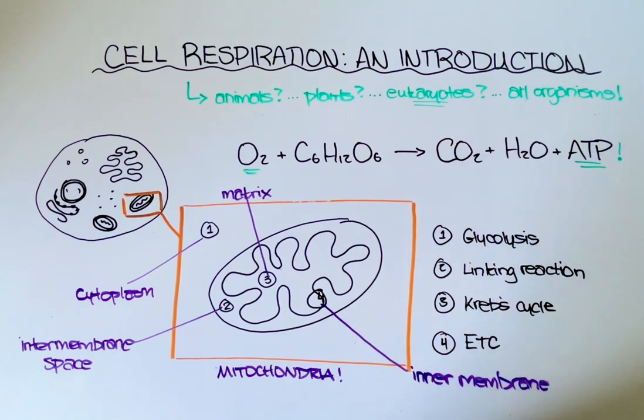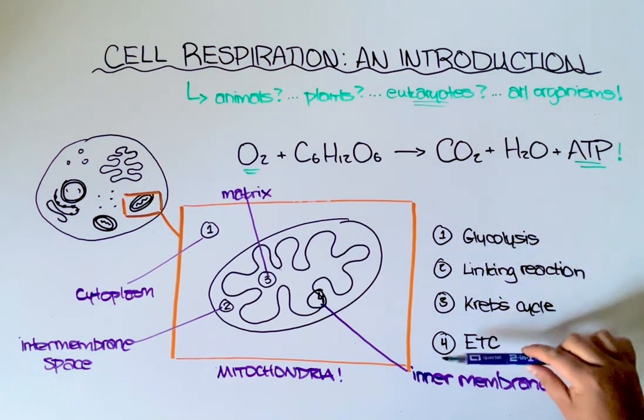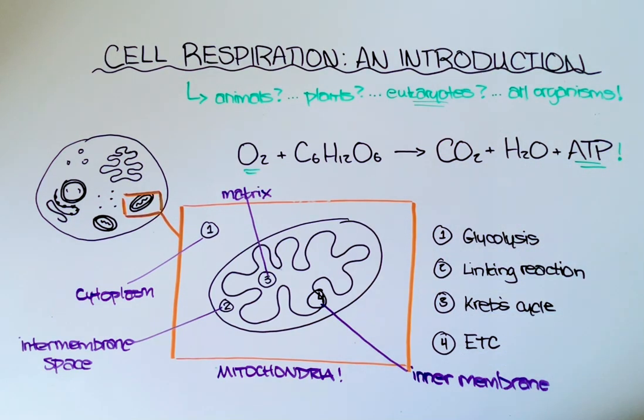So by the end, we end up with some ATP, which then again, our cells can use to fuel all these other processes. As you can see, there are a couple of other byproducts that are produced during some of these reactions, which we'll get into in our next video. Thanks, everyone.